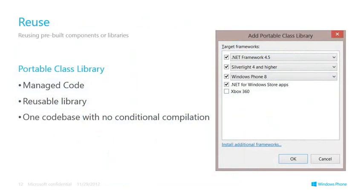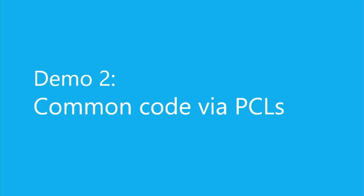Let's have a look at portable class libraries. These are managed code, reusable libraries - one code base with no conditional compilation. Everything you code into this is compiled once, and the DLL that comes out can be referenced directly from both a Windows Phone project and a Windows 8 project. Let's have a quick look at an example.